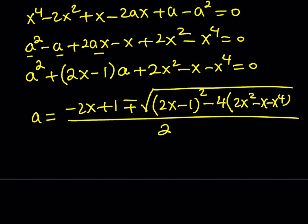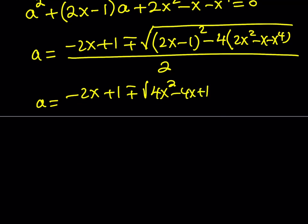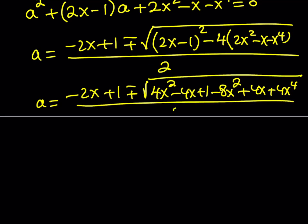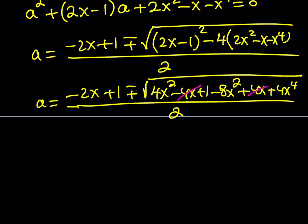This looks complicated, but when we expand and simplify it gets better. Negative 2x plus 1, plus or minus the square root of: expanding gives 4x squared minus 4x plus 1, and distributing gives negative 8x squared plus 4x plus 4x to the fourth. All over 2. Inside the radical, negative 4x and positive 4x cancel, and we get 4x to the fourth minus 4x squared plus 1.